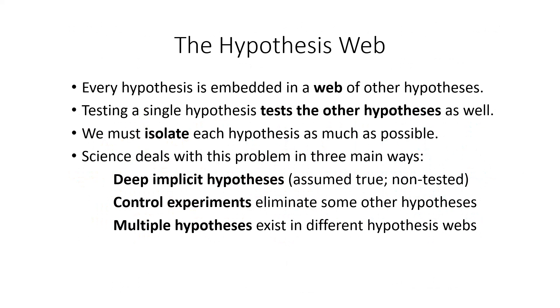So to summarize what we've said about the hypothesis web. Every hypothesis is embedded in a web of other hypotheses. Testing a single hypothesis tests the other hypotheses as well. We must isolate each hypothesis as much as possible in order to test it. And science deals with the problem in three main ways. It relies on certain deep implicit hypotheses, which are assumed to be true and not tested at the moment. It does control experiments, which eliminates some of the other hypotheses. It also uses multiple hypotheses, which exist in the context of different hypothesis webs.